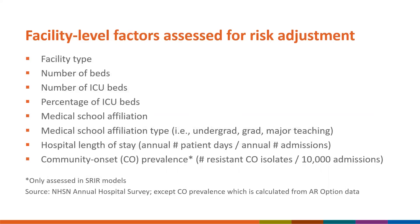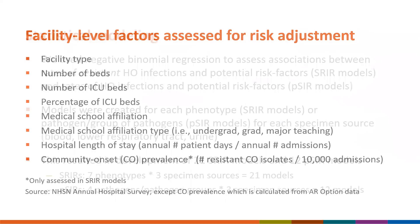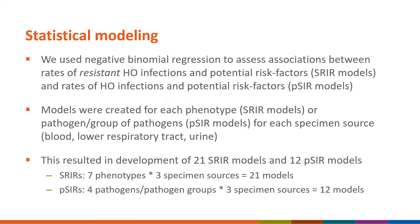Facility level factors assessed for risk adjustment included facility type, number of beds, number of ICU beds, percentage of ICU beds, medical school affiliation and affiliation type, hospital length of stay, and in the case of SRIR models only, community onset prevalence. We used negative binomial regression to assess associations between rates of resistant hospital onset infections and potential risk factors for SRIR models, and rates of hospital onset infections and potential risk factors for PSIR models. Models were created for each phenotype in the case of SRIRs, and for each pathogen or group of pathogens for PSIRs, by specimen source, resulting in 21 SRIR models and 12 PSIR models.